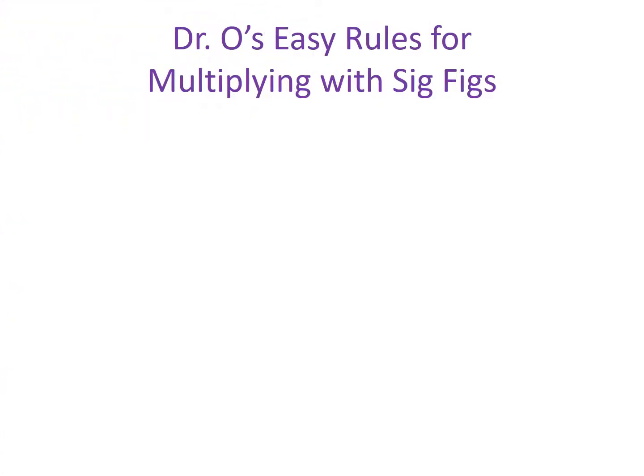There are three rules to remember when determining significant figures when performing multiplication or division. Rule number one is to do all the math first. Even if you have a problem that requires several steps or has multiple functions, you do all of the math, and you do that math without any rounding.